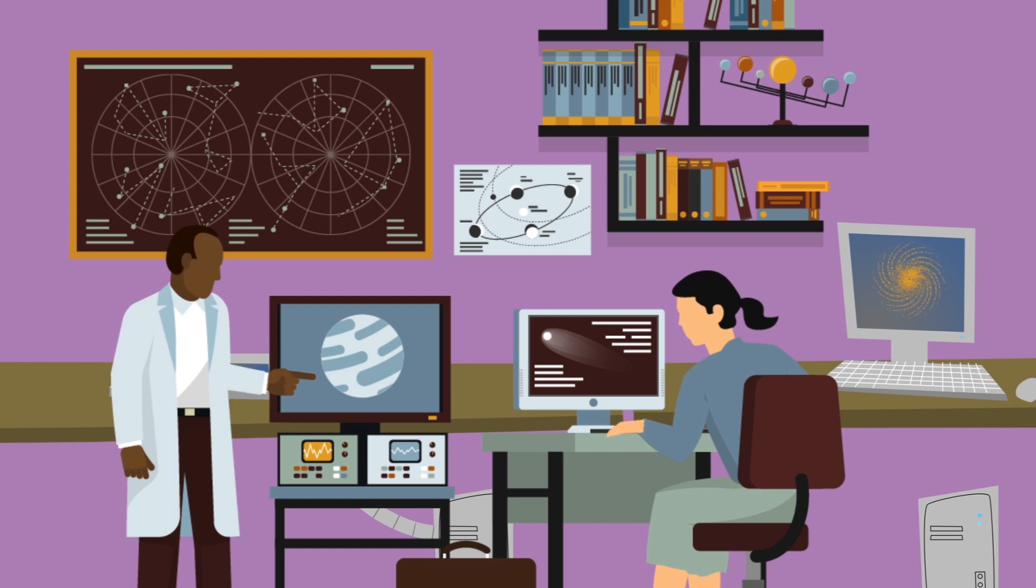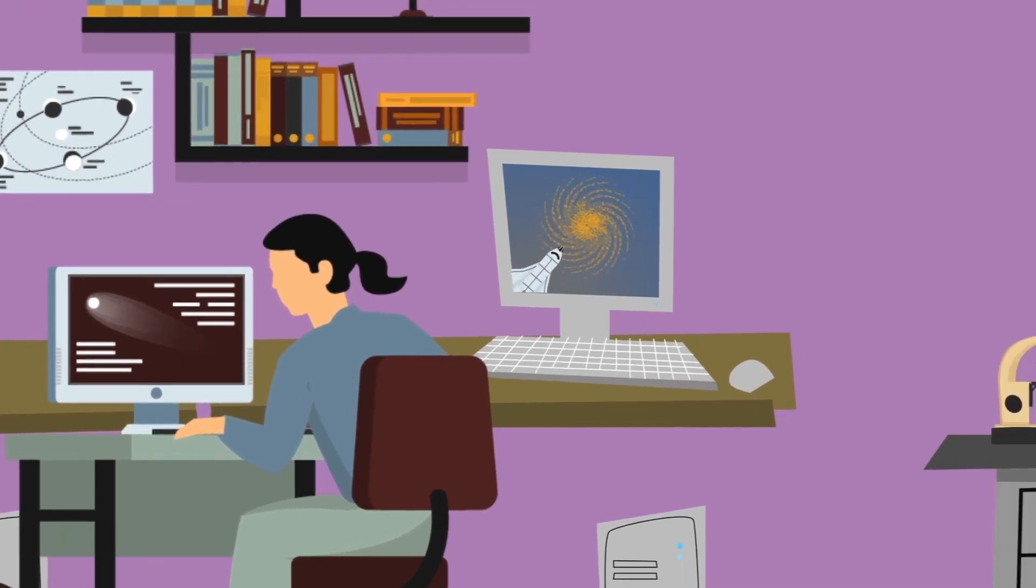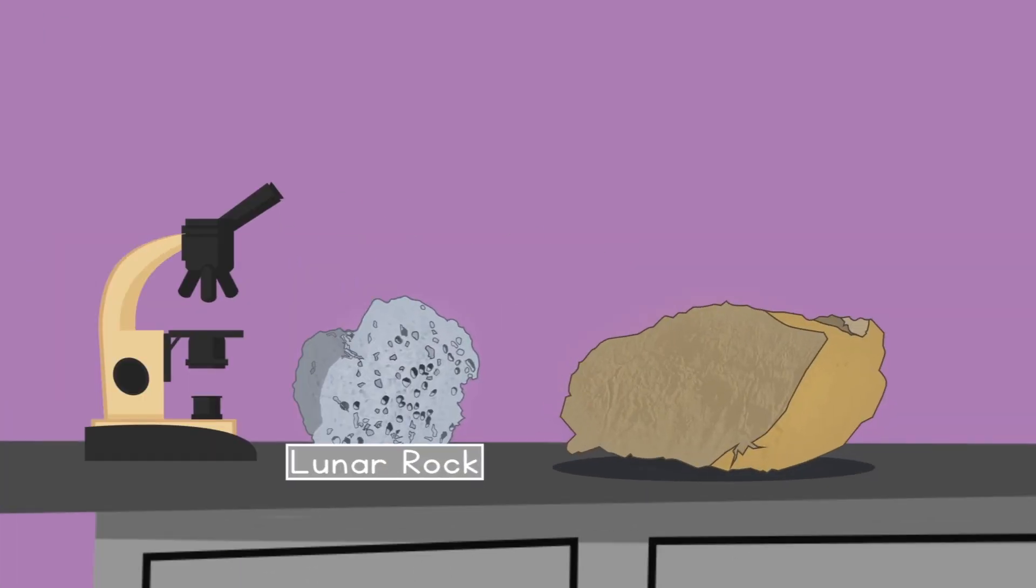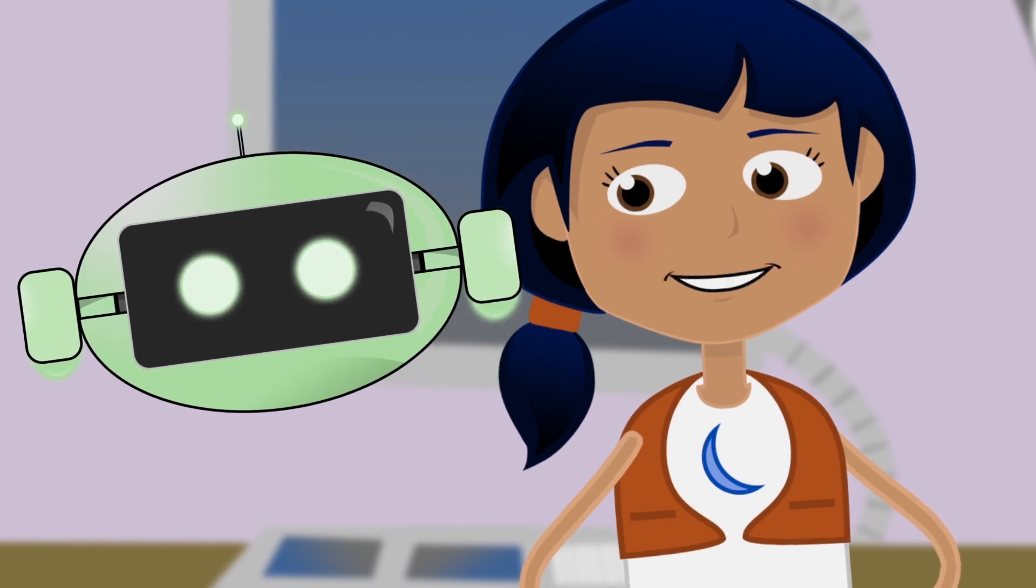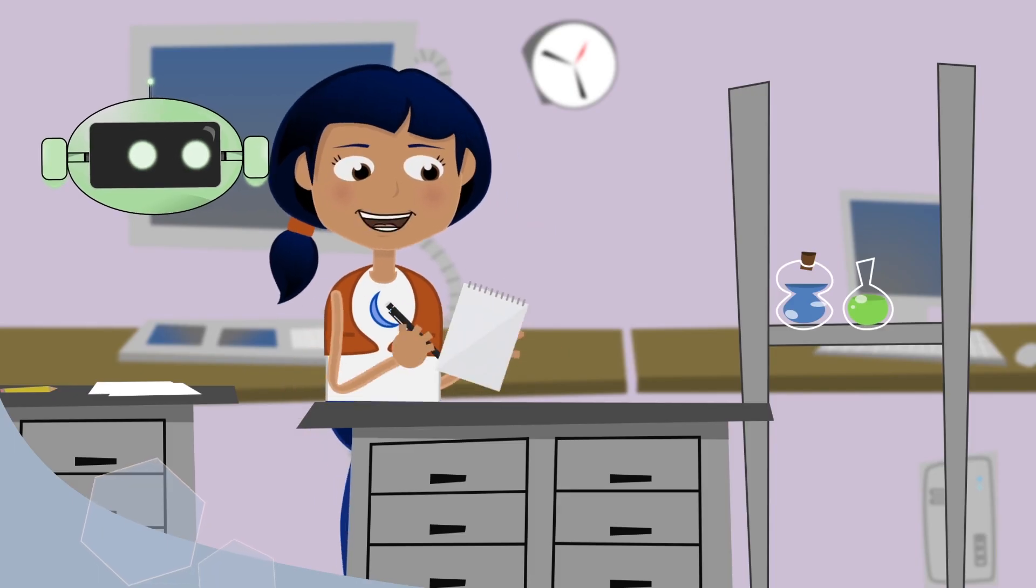Of course, scientists are always doing new studies and learning more about the Moon. In 2014, scientists looked at lunar rocks collected from previous Apollo missions and found them to be different enough from Earth rocks to add support to the Giant Impact Hypothesis. That's the great part about science. We can always learn something new. I love science. Me too, bud.